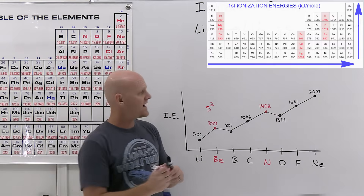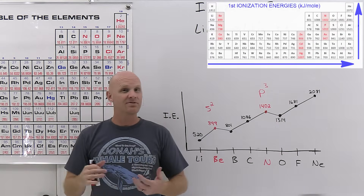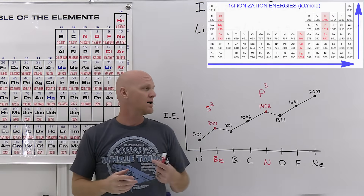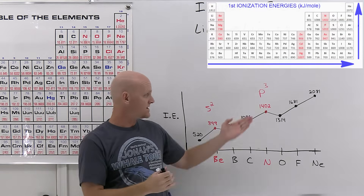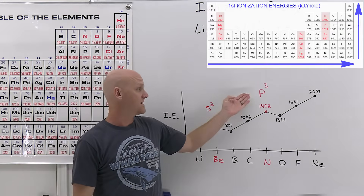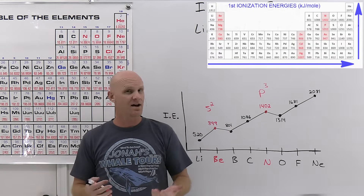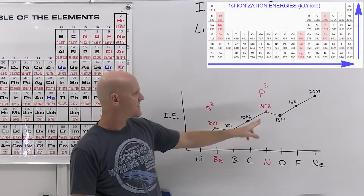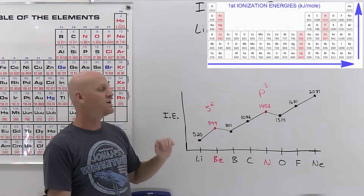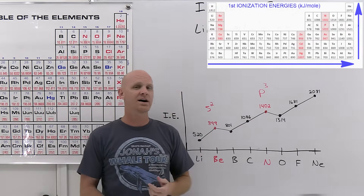Nitrogen, on the other hand, has a half-filled P subshell. When you have an exactly half-filled subshell, like chromium and molybdenum among transition metals, each P orbital has one unpaired electron and their spins align, lowering the energy. Nitrogen has three electrons with aligned spins; removing one would leave only two aligned spins, raising the energy. So it costs more energy to remove an electron from nitrogen, making nitrogen's ionization energy higher than oxygen's.